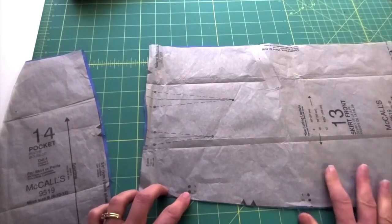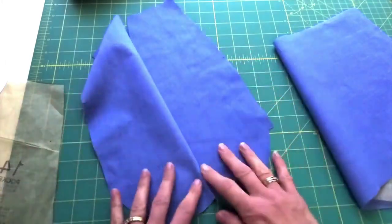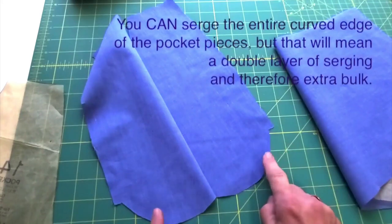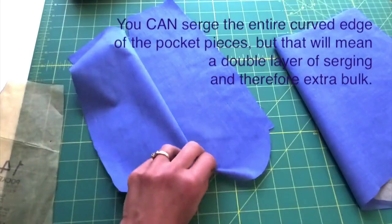We don't really need it on the back, just on the front. The first thing I'm going to do is go to my serger and just serge that little bit at the bottom of my pocket pieces. So I'm going to go to the serger and come right back. Don't worry, we'll serge the rest of the pocket later.